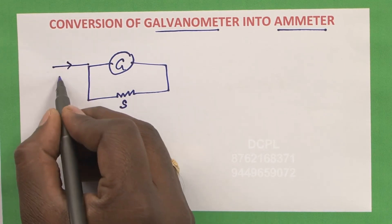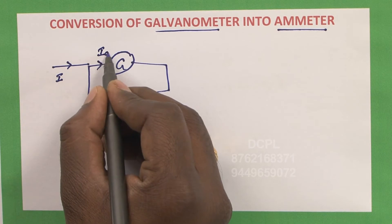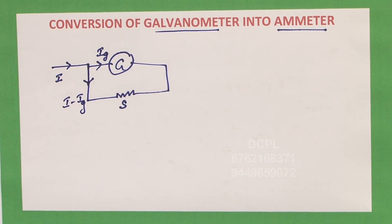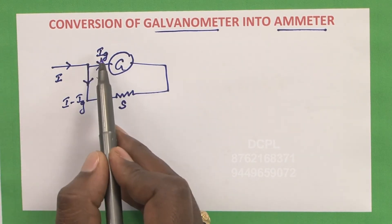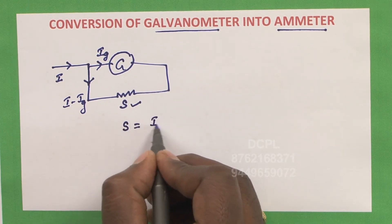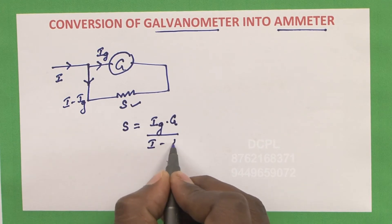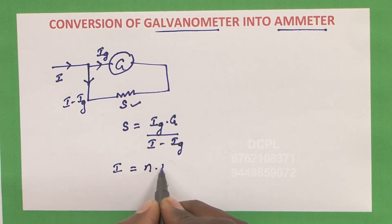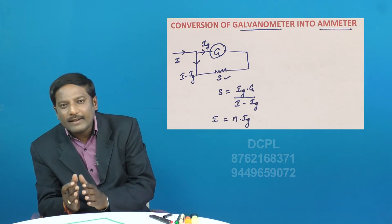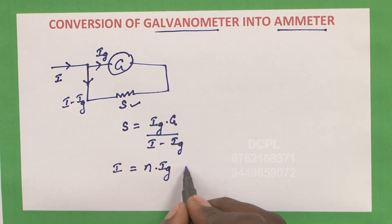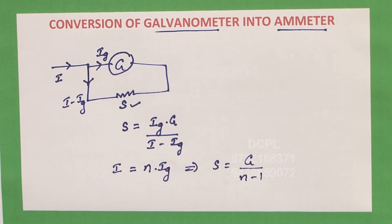Let the current from the external source be I, and the current flowing through the galvanometer be Ig. The remaining current flows through the shunt resistance, that is I minus Ig. To convert the galvanometer of range Ig to range I, the shunt resistance is S equals Ig into G divided by I minus Ig. If the range is N times Ig, the shunt is given by G divided by N minus 1, where N is the range of the ammeter.